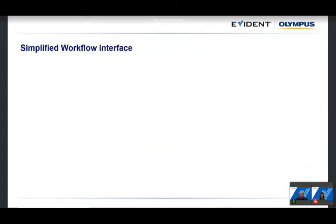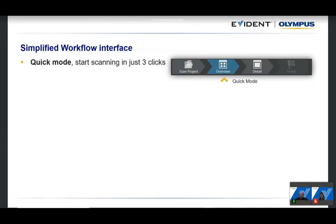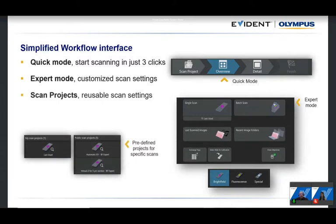The instrument supports different levels of users. A beginner can load a slide and start a scan in just three clicks, while an expert mode allows full control over every parameter. You can also save scan projects — for example a virtual Z-stack for a five-micron section — so that studies requiring extensive scanning always use consistent parameters, avoiding biases from changing settings mid-study.